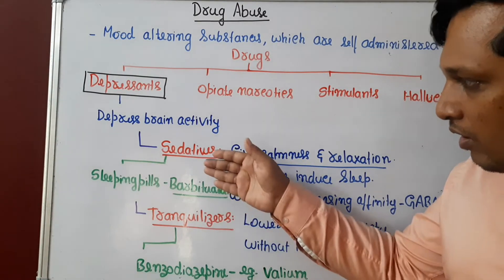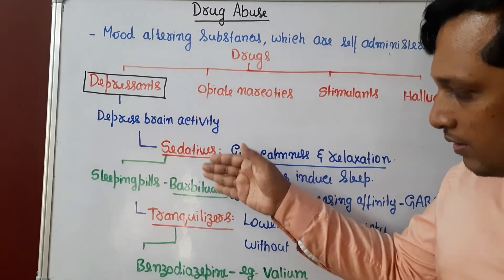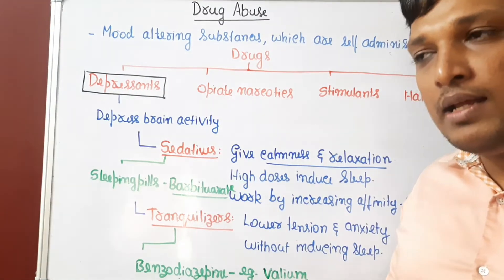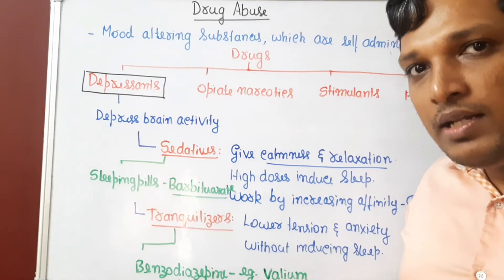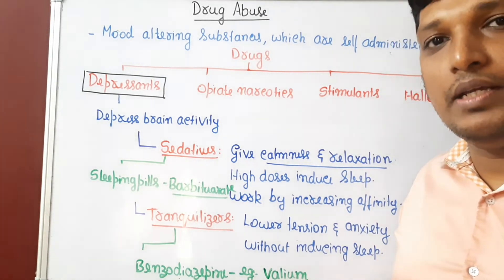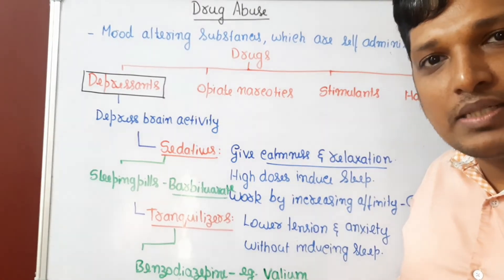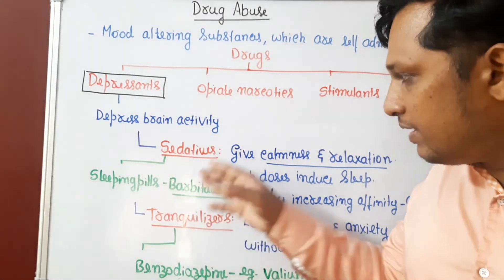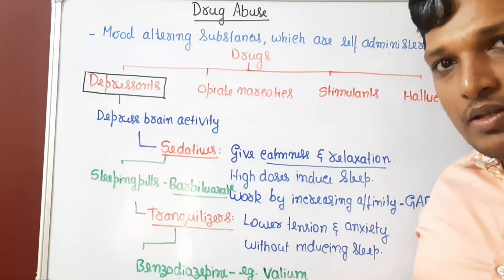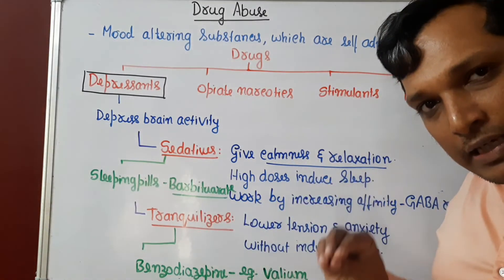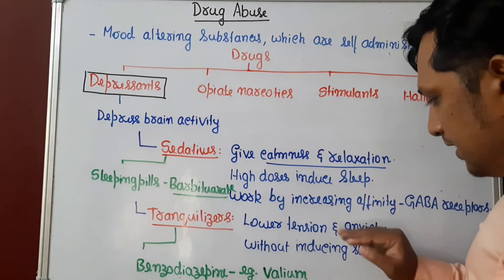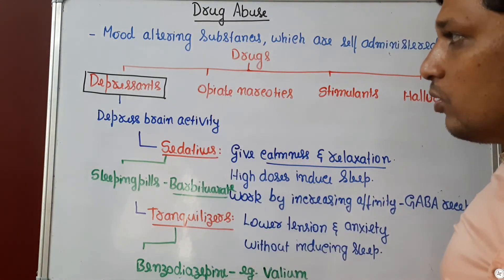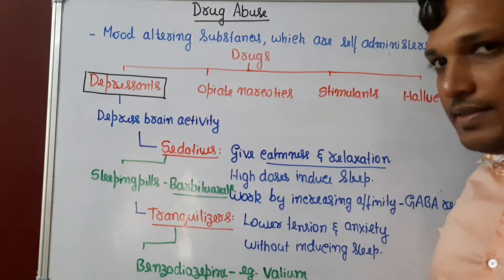These are the two groups of depressants. Overall, the difference between a sedative and a tranquilizer is: when a sedative is given to a person or animal, it will slow down body activity — the person won't be mobile or agile. Whereas tranquilizers, given in low dosages, will just lower tension and anxiety. This is the first group of drugs known as depressants.